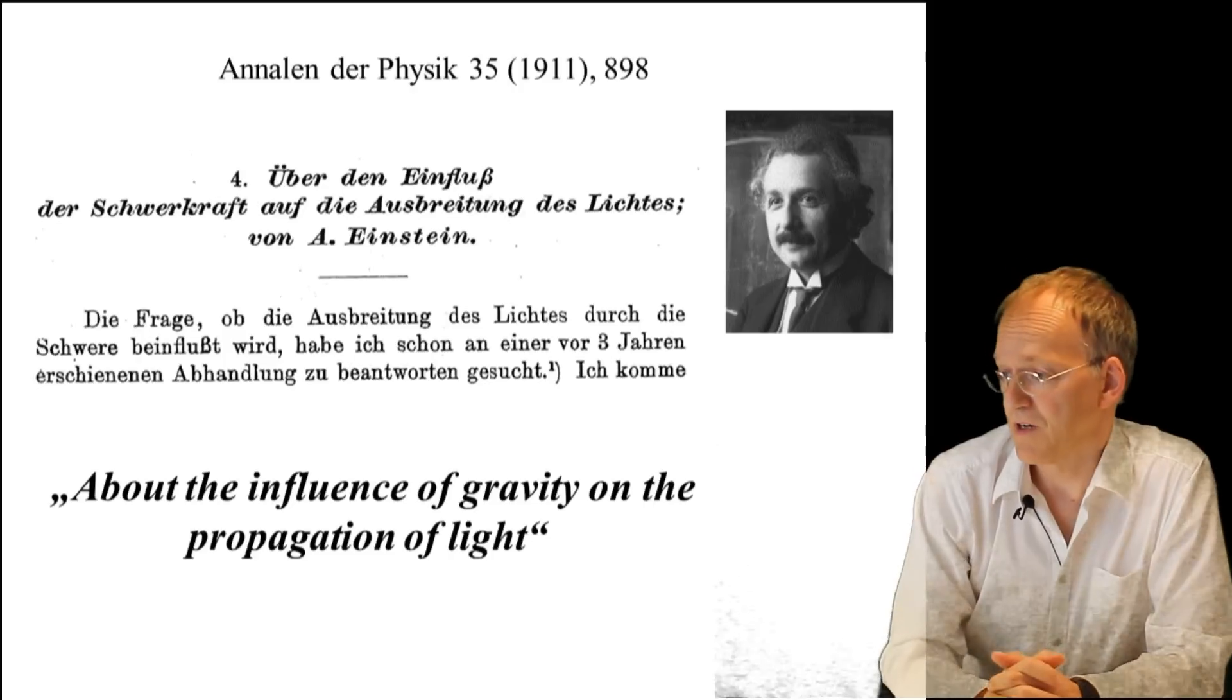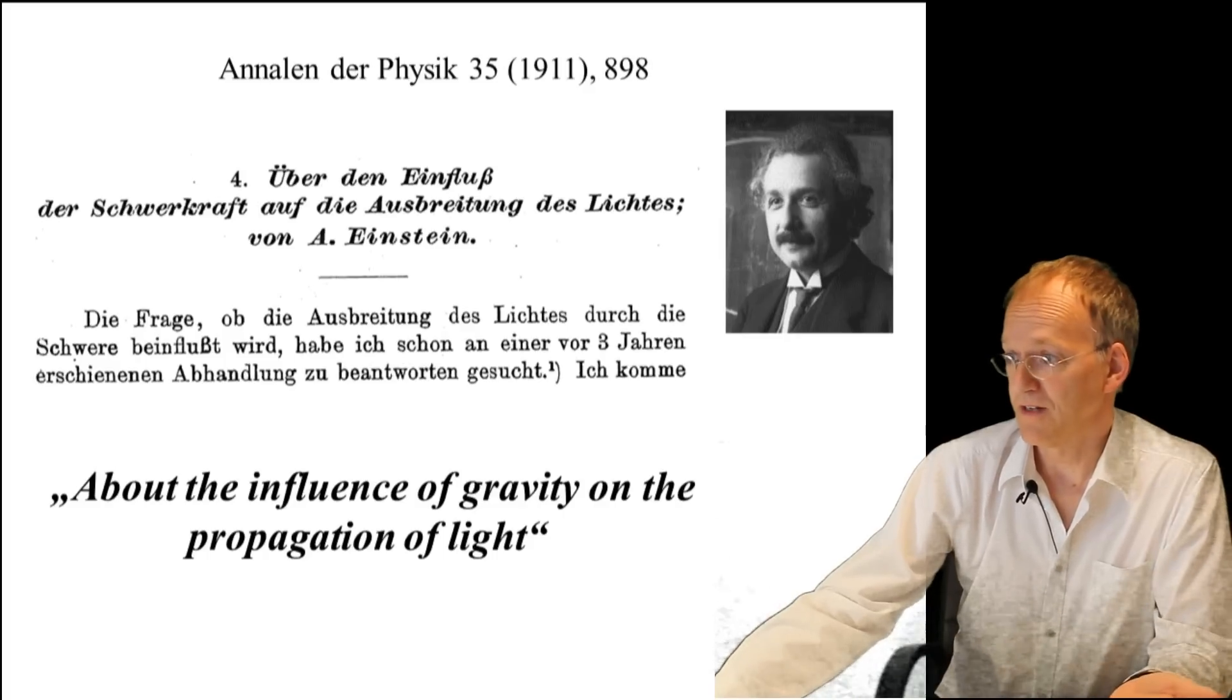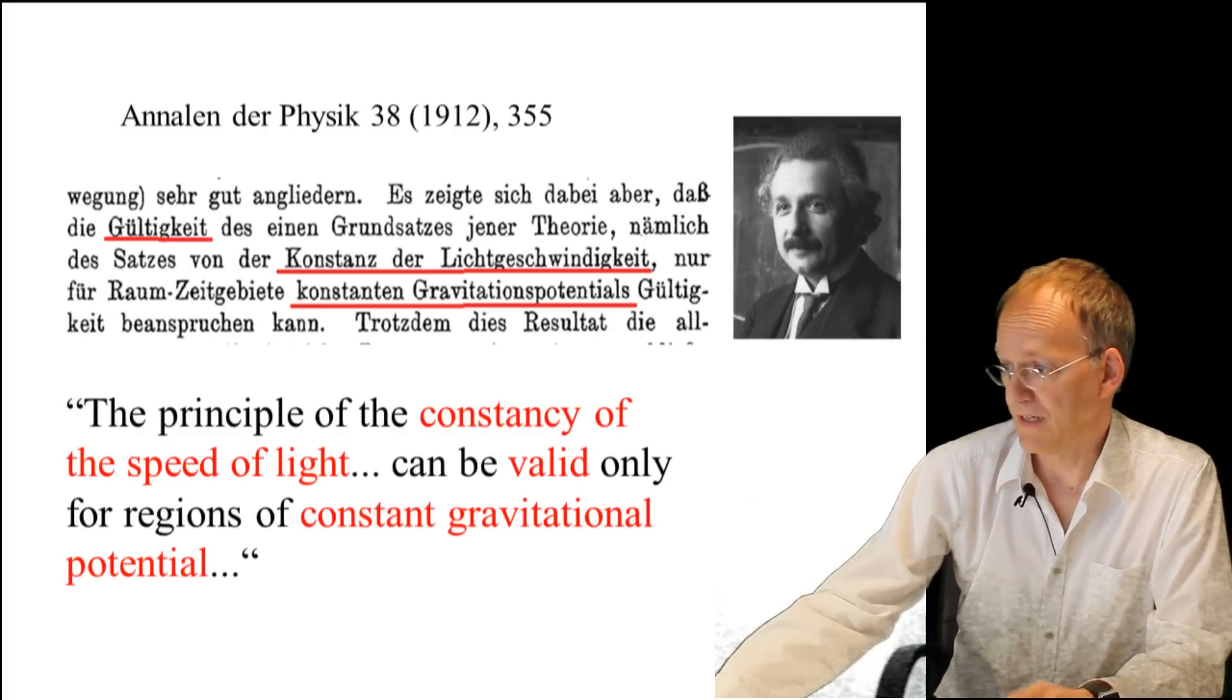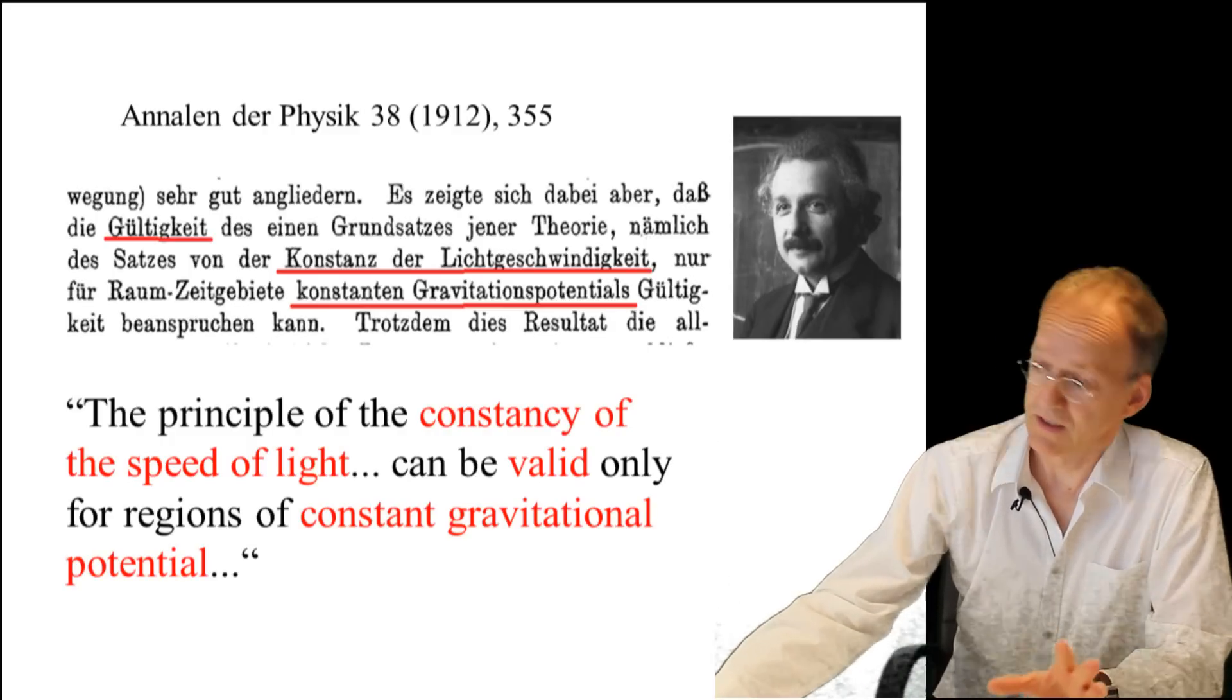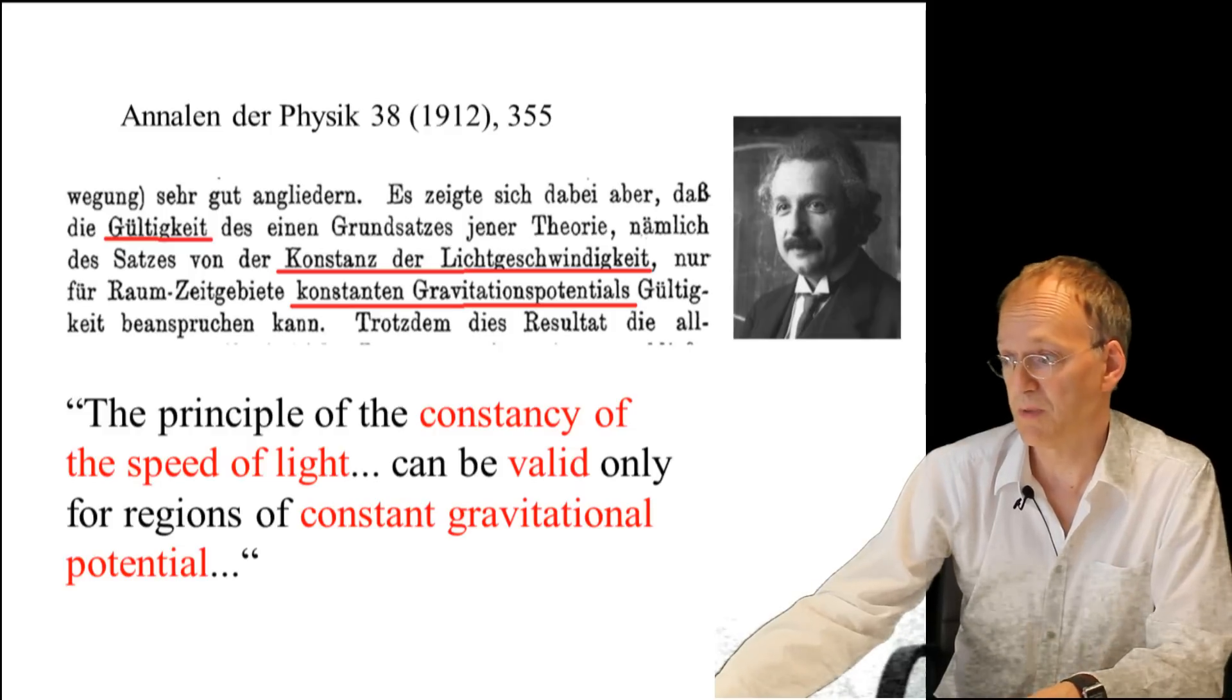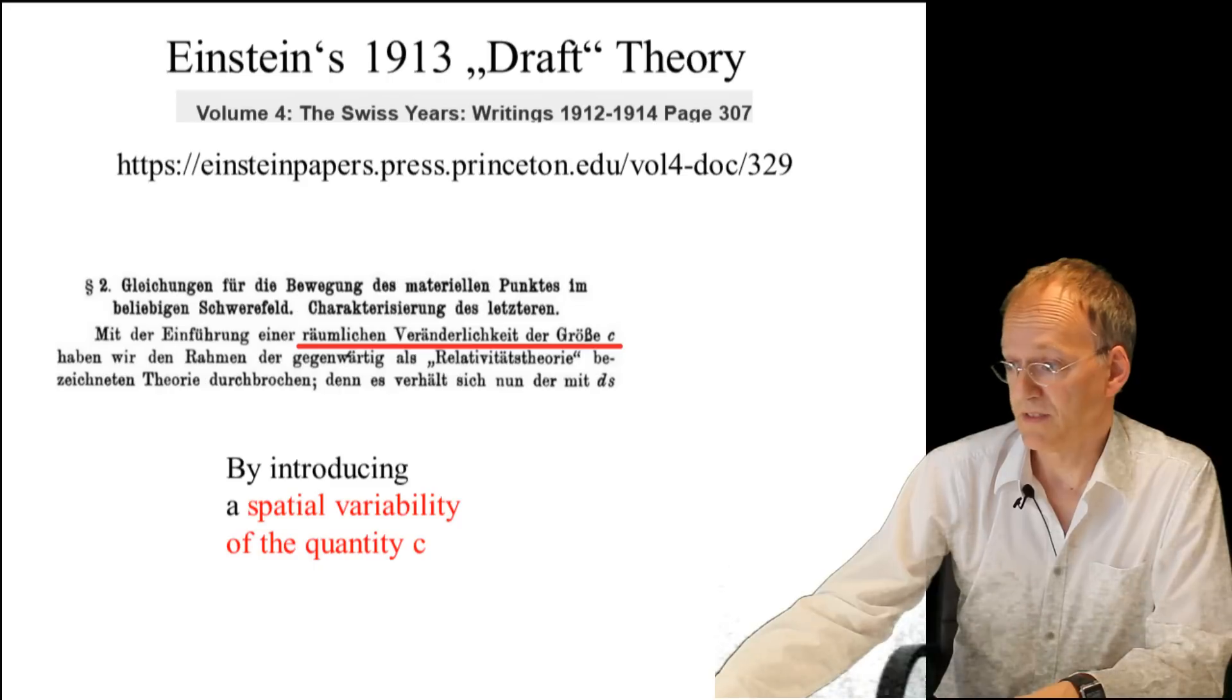I'm just showing you some of the articles. There is overwhelming evidence that Einstein started there. Look at this article from 1912: the constancy of the speed of light is valid only if the gravitational potential is constant, which is not so. It has to be variable.